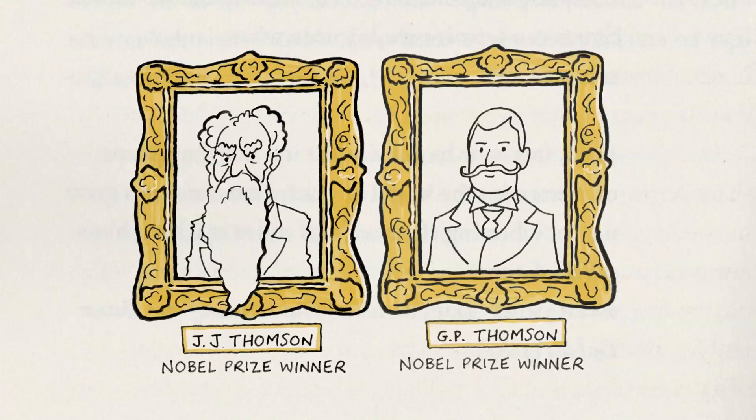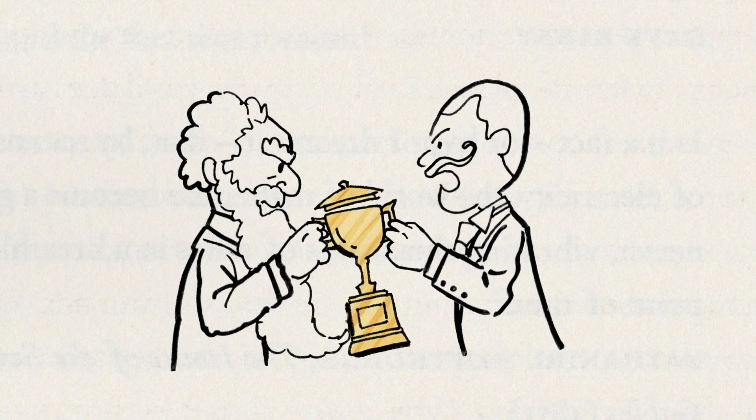J.J. Thompson got the Nobel Prize for proving that an electron is a particle. His son got the Nobel Prize for proving that it isn't.